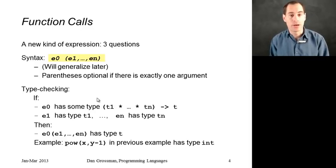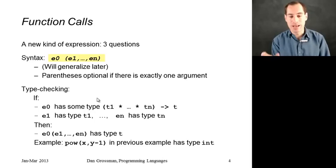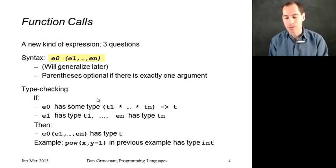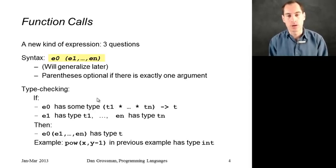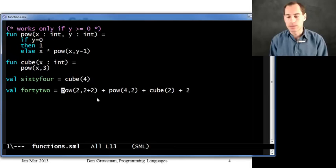Type checking is interesting. How do you type check a function call? Rule number one: e0 better have a function type. It better have a type that has that arrow in the middle with the arguments on the left and the result on the right. Assuming it does, then we type check all of the other expressions, e1 up through en. There better be the right number of them for the function we're calling, and each one better have the right type. If that's all true, then the result of the function call is the result type of e0, so it would have type t. That's why when we had something like pow of x comma y minus 1, it ended up having type int.